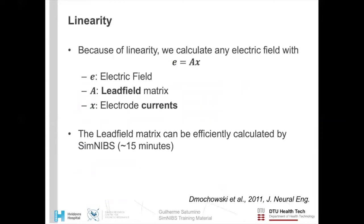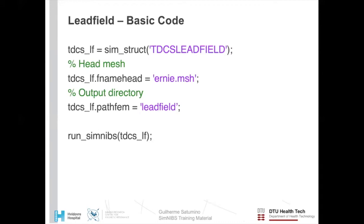This linearity property allows us to, given a fixed list of electrode positions and a limited set of simulations, calculate electric fields caused by any combination of such electrodes as a simple matrix vector multiplication. Here, E is the electric field, A is the lead field matrix, which is a set of pre-calculated electric fields, and X are electrode currents. We can calculate this matrix extremely efficiently in between 15 minutes to one hour depending on your computer. And the code is very straightforward. It looks just like this. It's just four lines of code in MATLAB or equivalent code in Python.